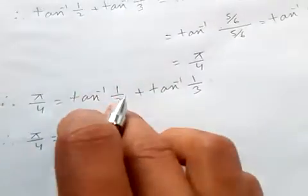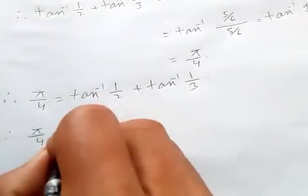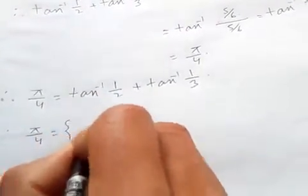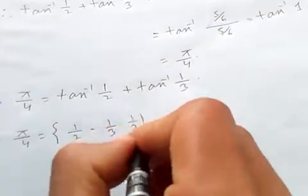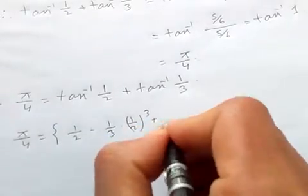Pi by 4 is given. Now using Gregory series you will get half minus 1 by 3 times 1 by 2 cubed plus and so on.